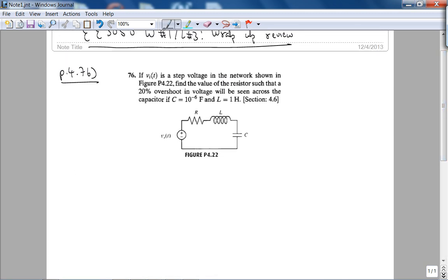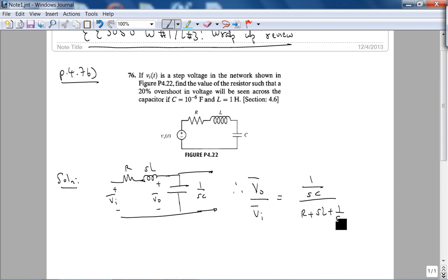So to solve this problem, let's see what he's asking. They're saying that VIN of T is a step voltage in the network shown here. Find the value of the resistor such that these specifications are satisfied. Now, the first thing we've got to do is convert it into the S domain. So there it is, SL, and this is 1 over SC. The voltage is defined as the voltage across the capacitor, the output voltage. Therefore, by voltage divider, our transfer function is simply given by 1 over SC over R plus SL plus 1 over SC.